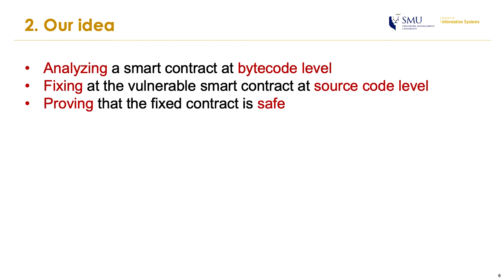How can we do that? This is our idea. First, we analyze smart contracts at the bytecode level because it is more precise than analysis based on source code. Second, we fix smart contracts at the source code level, because it is more transparent to the user who will understand our fixes. Finally, based on the way we analyze the smart contract, we can prove that our fixed smart contracts are safe.